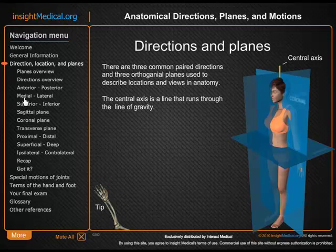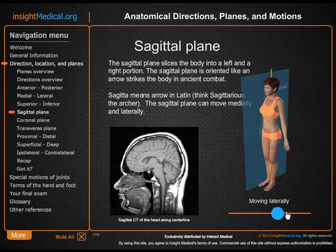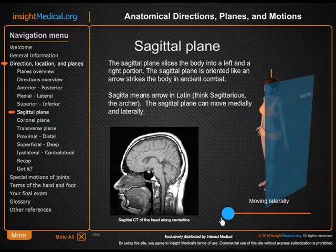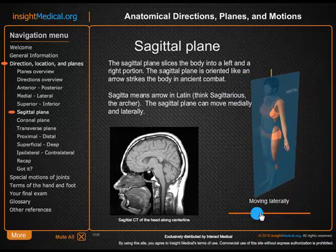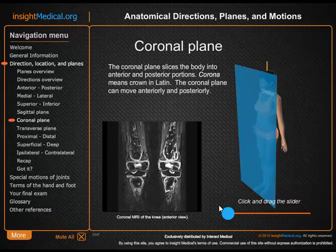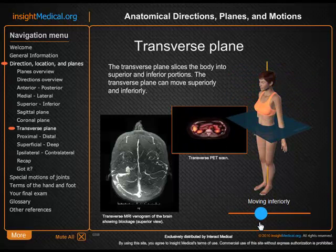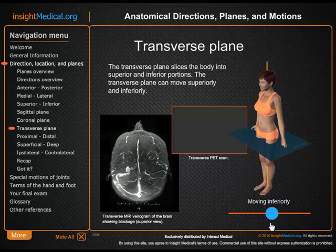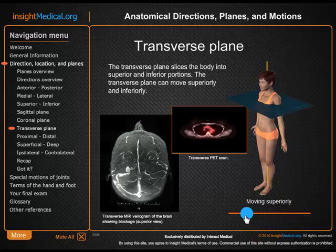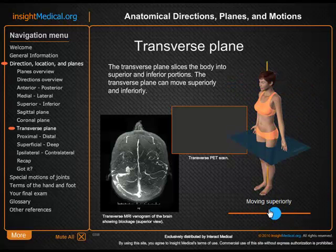Here we can talk about the sagittal plane, for example. With the aid of a simple interactive animation, we can convey a much stronger idea of what the sagittal plane is. It's accompanied by a CT of the sagittal cranium. The same thing is true for the coronal plane and the transverse plane. In the transverse plane, we have a section from an actual PET scan that makes it a little more real when you see the plane corresponding to actual imagery.